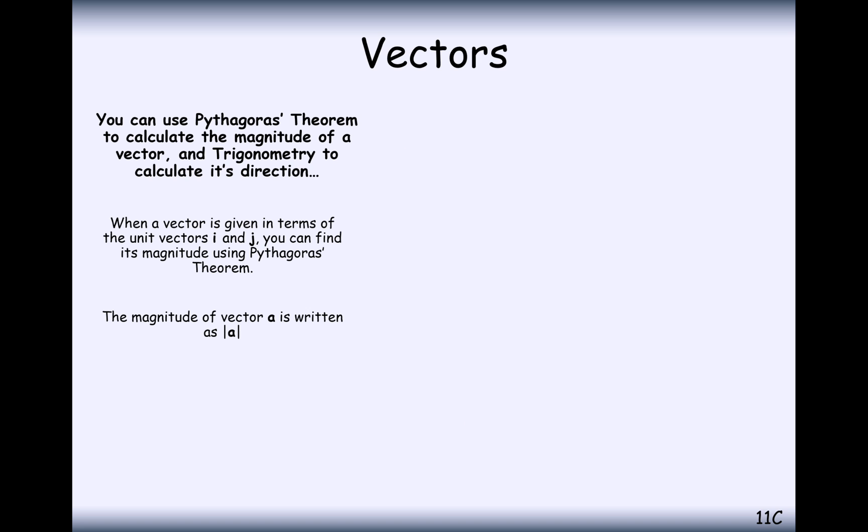The way that we would work out the magnitude of a vector is by using a bit of Pythagoras' theorem. First of all, the notation for magnitude of a vector is with two vertical lines either side of that vector. The question here, find the magnitude of the vector, will be the Pythagorean distance on the diagonal of this triangle here.